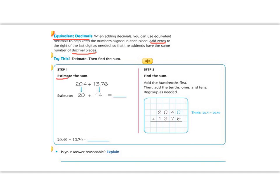First we're going to estimate. We have 20.4. So if we look at the 0, we look next door and we see a 4. So that means we're going to stay the same, so we round to 20. Then we have 13.76. If we underline the 3 and we look next door, I see a 7. 7 makes me round up. So 13.76 becomes 14. 20 plus 14 gives me 34. So I think it's going to be about 34.